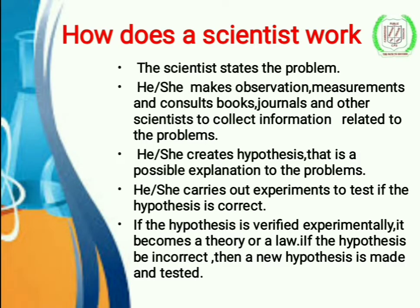How does a scientist work? First, the scientist states the problem. He or she makes observations, measurements, and consults books, journals, and other scientists to collect information. Based on observations, the scientist prepares a hypothesis — a possible explanation about the problem — and designs an experiment to test whether the hypothesis is correct.